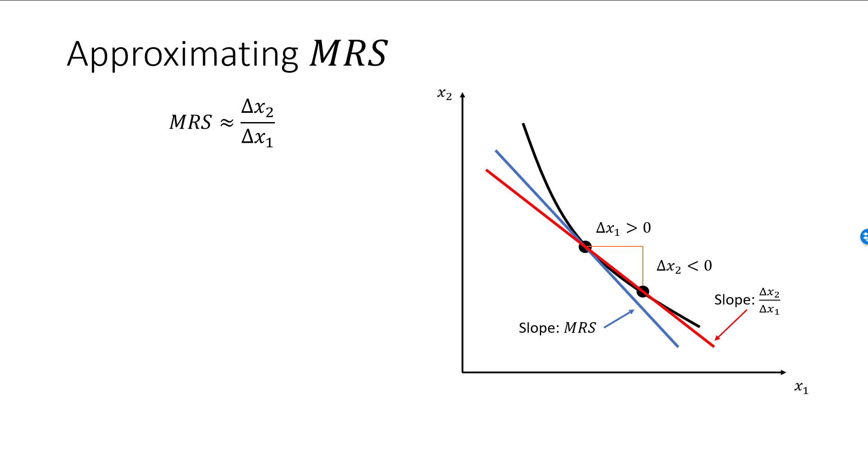But since the blue line and the red line are approximately the same, this means that my new bundle is almost on the indifference curve. As you can see from the picture, x2 should be reduced by a slightly smaller amount than 0.04. This is the reason for the name rate of substitution.